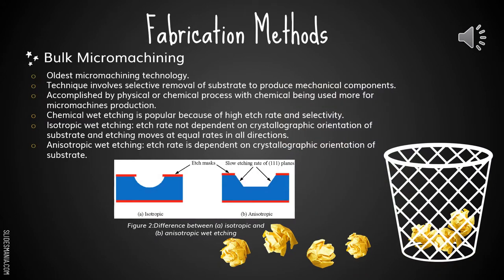There are 4 fabrication methods. The first one is bulk micromachining, which is the oldest micromachines technology. The technique involves selective removal of substrate to produce mechanical components, accomplished by physical or chemical process, with chemical being used more for micromachines production. Wet etching is popular because of high etch rate and selectivity. Isotropic wet etching has an etch rate not dependent on crystallographic orientations of substrates and etches at equal rates in all directions.